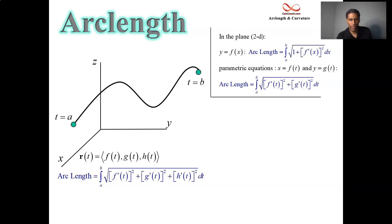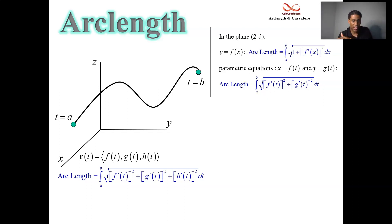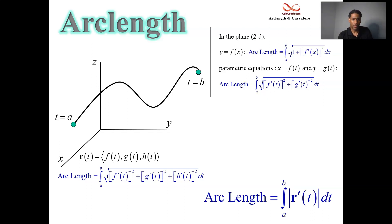The interior of that integral should look familiar. Whenever you take components, square them, add them, and take a square root, you're finding the magnitude of a vector. But these aren't the original position components being squared — those are the derivatives that are squared. The derivative vector is the velocity vector, and what you're finding in that integrand is the magnitude of the velocity vector. The magnitude of velocity is speed — the speed you're traveling as you go along the curve.